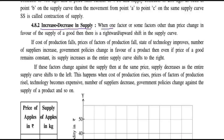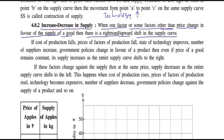Now for increase and decrease of supply: this occurs when one factor or a group of factors other than price change in favor of supply, causing a rightward shift in the supply curve. For example, if technology improves, supply also improves — production becomes cheaper, profit rises, and the producer increases supply.